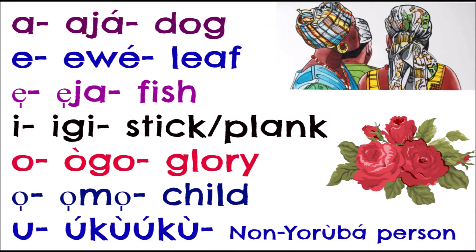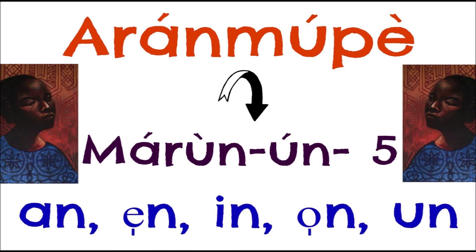'Uku' refers to a non-Yoruba person. Back then, people who were not necessarily Yoruba lived among the Yorubas in many cities. They could speak some Yoruba — not perfect, but they had their own dialects. You could tell they weren't really from there. They would sometimes be called 'takpa,' 'aboki,' 'uku,' or 'kemberi' — names designated for non-Yorubas.